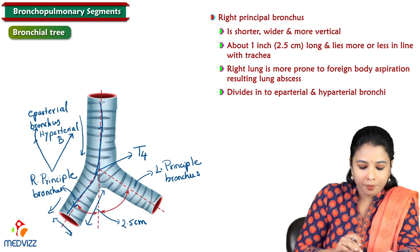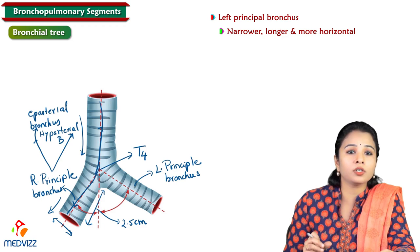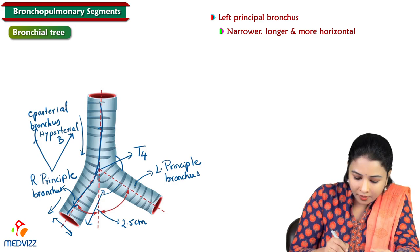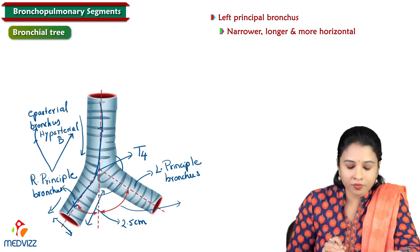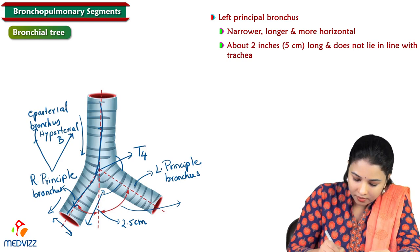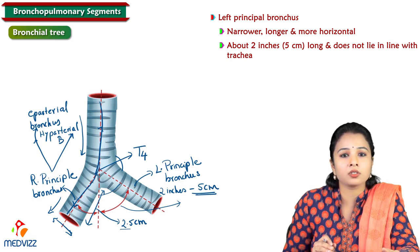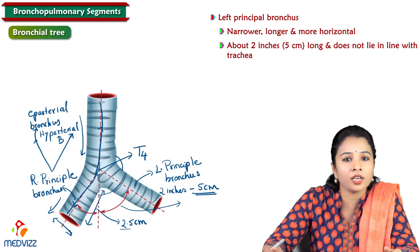Moving on to the left principal bronchus: it is narrow, longer, and more horizontal than the right. It makes a more acute angle with the trachea and is not in line with it. The length of the left principal bronchus is around two inches, approximately five centimeters — almost double the size of the right principal bronchus.